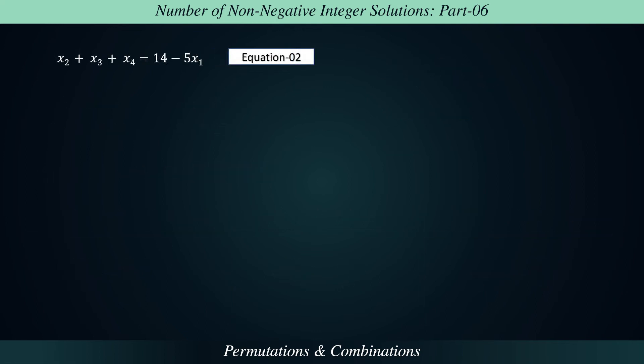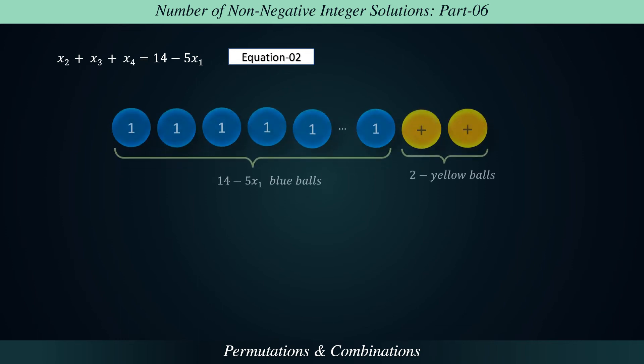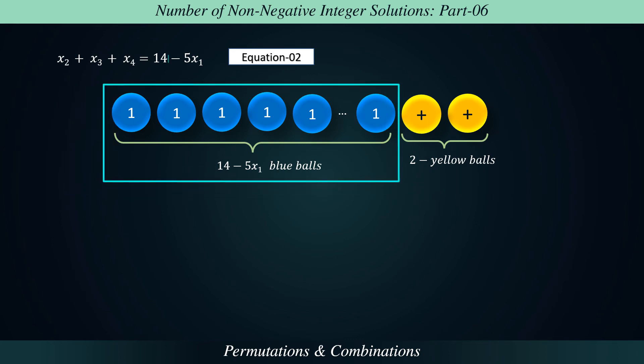We can solve this problem using second approach called blue and yellow ball method. Please note that number of blue colored balls equals number on right hand side that is 14 minus 5x1 and number of yellow colored balls equals number of positive sign on left hand side that is 2. So, the total number of ways of arranging 16 minus 5x1 balls in which 14 minus 5x1 are of one kind and 2 are of second kind is equal to 16 minus 5x1 factorial divided by product of 14 minus 5x1 factorial and 2 factorial.